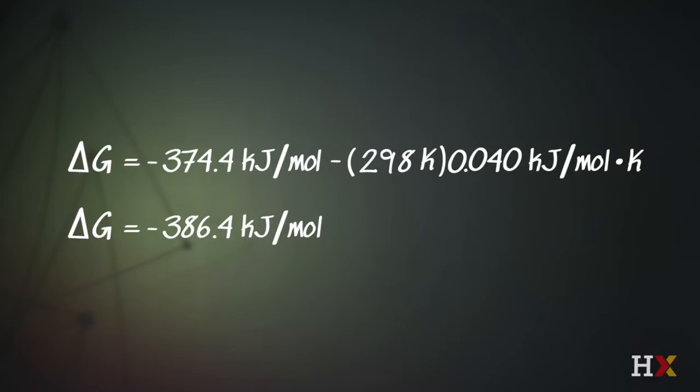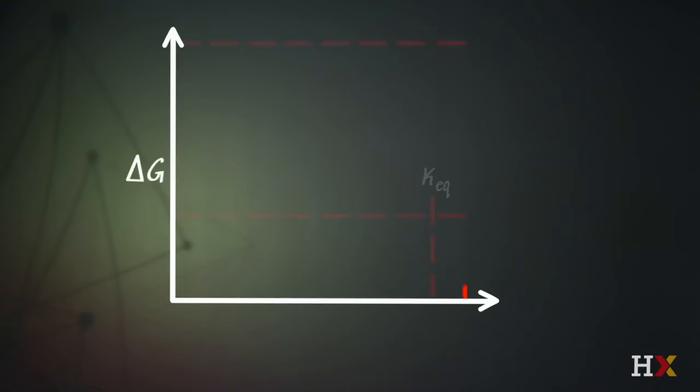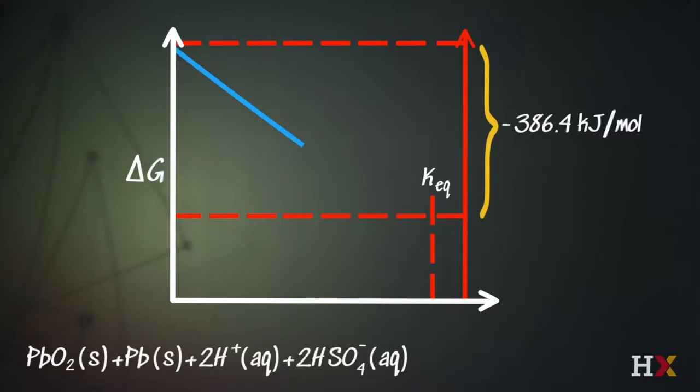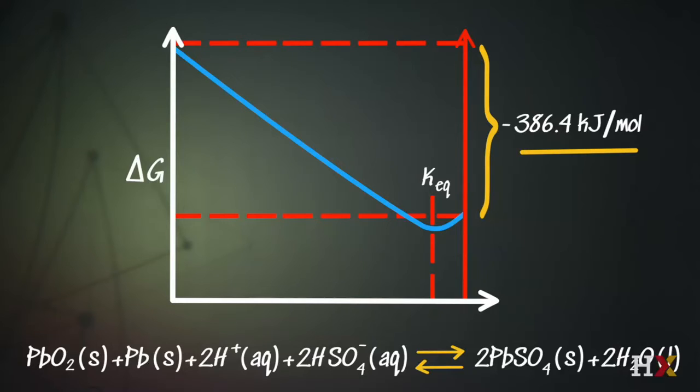One thing we always do in this course is we always sketch out the free energy surface. So this is delta G going from reactants to products, and of course we can consume energy from the battery by having the reaction go in the forward direction, but we can recharge the battery by driving that reaction in the opposite direction by applying a reverse voltage, which is what the alternator does. But nevertheless, we have a minus 386.4 kilojoules per mole drop in Gibbs free energy.